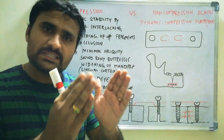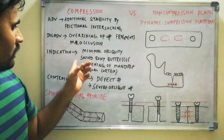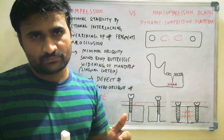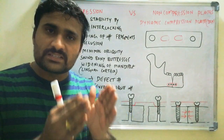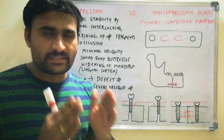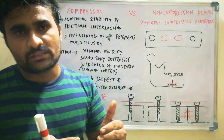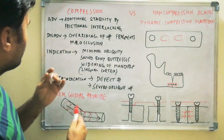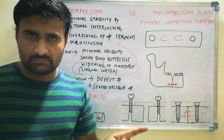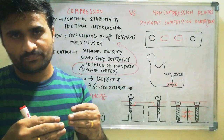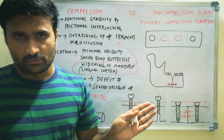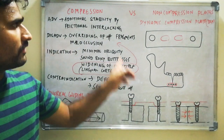If there are no sound bony buttresses, it will result in overriding of the fractured fragments. Regarding contraindications: defect fractures with bone loss, and severe oblique fractures — the fracture should be minimally oblique to use compression plates. Another disadvantage is widening of the mandible, especially towards the lingual cortex. When there is widening at the lingual cortex, it also produces widening of the gonial angles. This is also one of the disadvantages of compression plates.